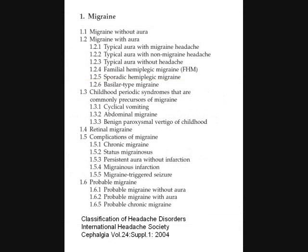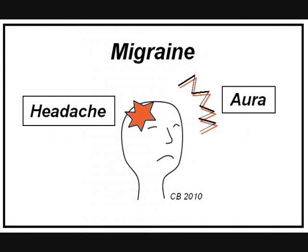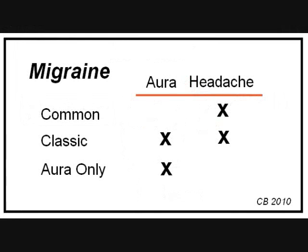Speaking of the various neurologic symptoms, this is the full International Headache Society list of different types of migraines. There are too many to cover them all, so we will concentrate on the three most common types. These are different ways of combining two things: headache and aura. Aura is a particular visual display or sensory defect that comes just before the headache, if there is one.